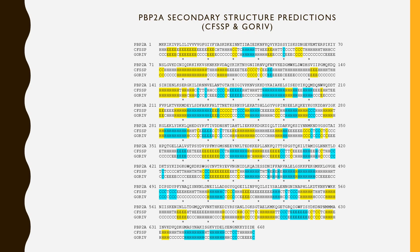What is highlighted in yellow is where our two secondary structure predictions agree and correspond with each other. Highlighted in blue is where the secondary structure corresponds and agrees with our tertiary structure, which we'll look at in the next slide.